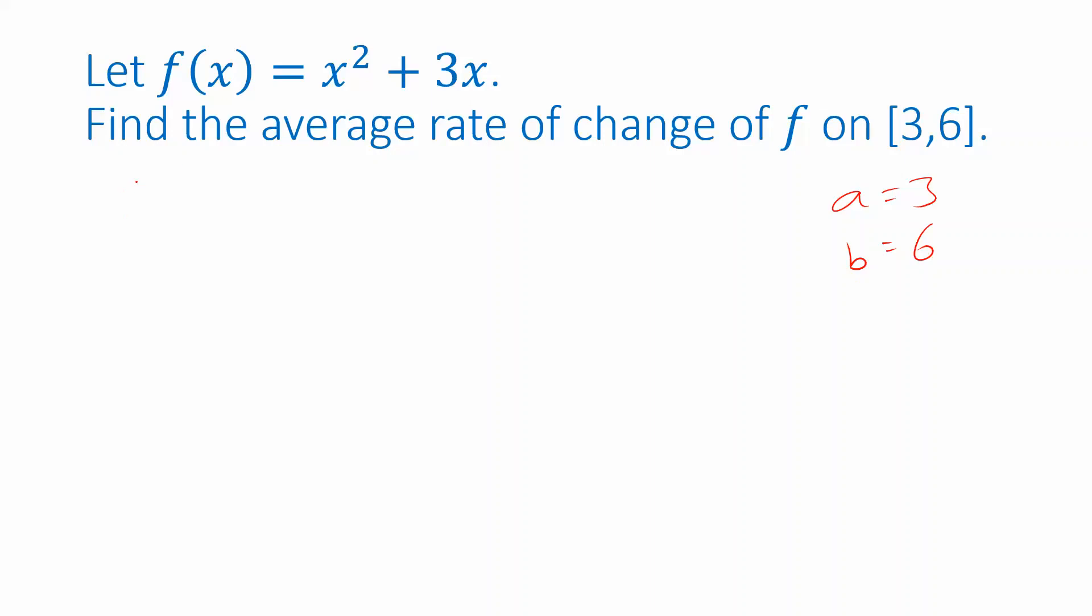interval and think of those endpoints as the values we have to plug into our function. So to get the average rate of change, we'll take f of the endpoint minus f of the starting point divided by the difference between the ending point and the starting point.